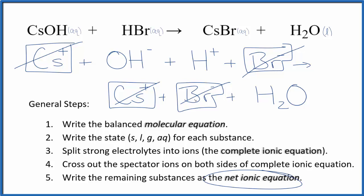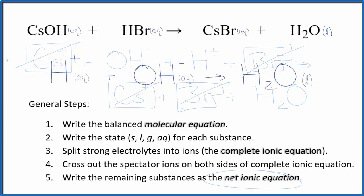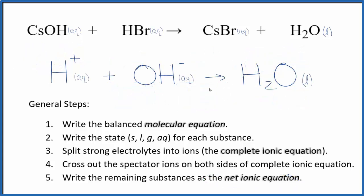We'll clean it up and write the states to get our net ionic equation. This is the balanced net ionic equation for CsOH plus hydrobromic acid. Note that charge is conserved: we have a 1+ and a 1−, giving a net charge of 0 on the reactant side, and the products are neutral — net charge of 0 as well. If you count the atoms, they're balanced too. This is Dr. B with the balanced net ionic equation for CsOH plus hydrobromic acid.